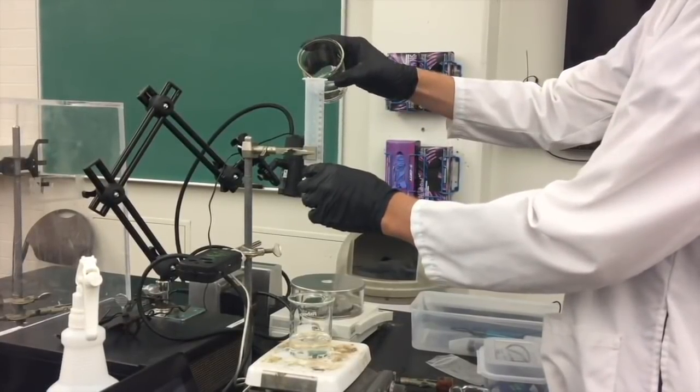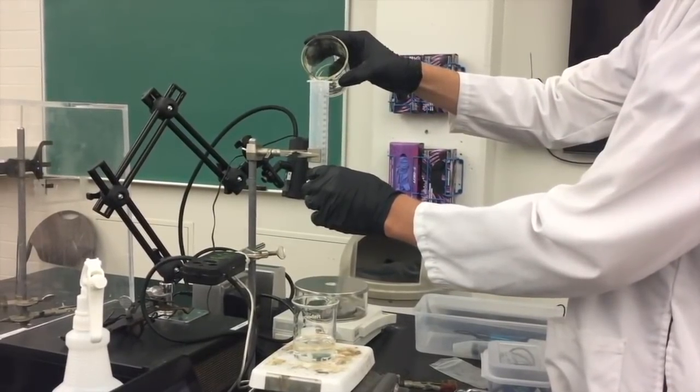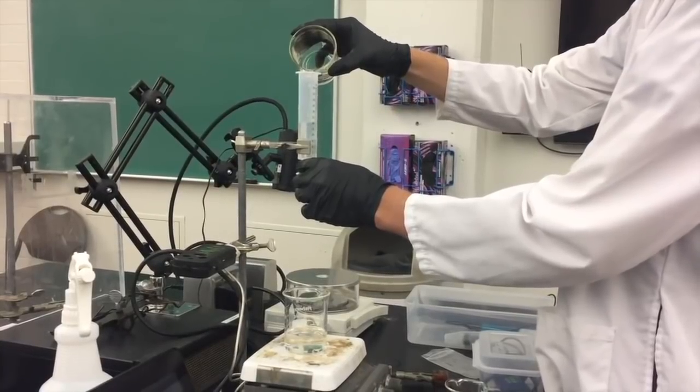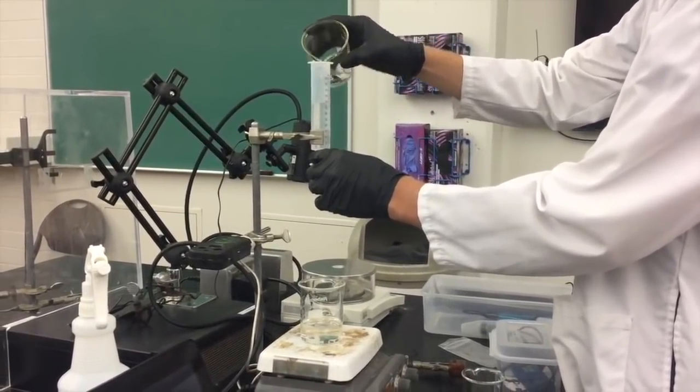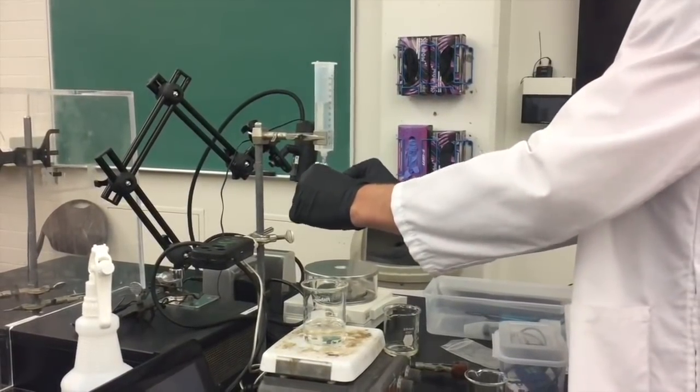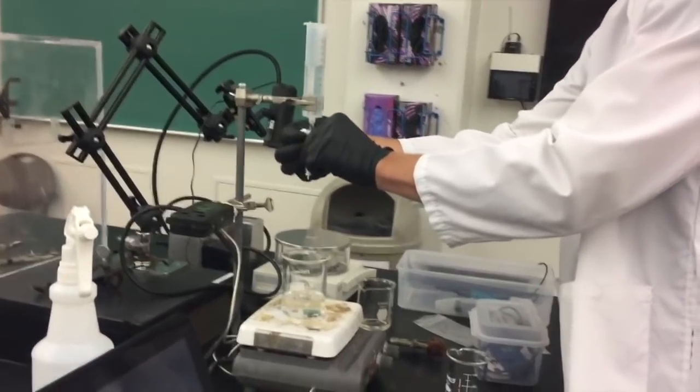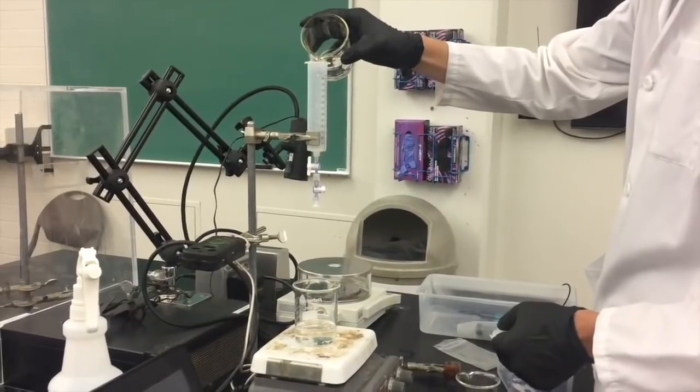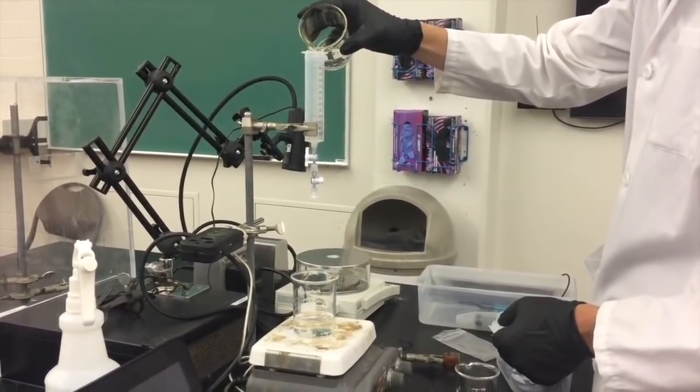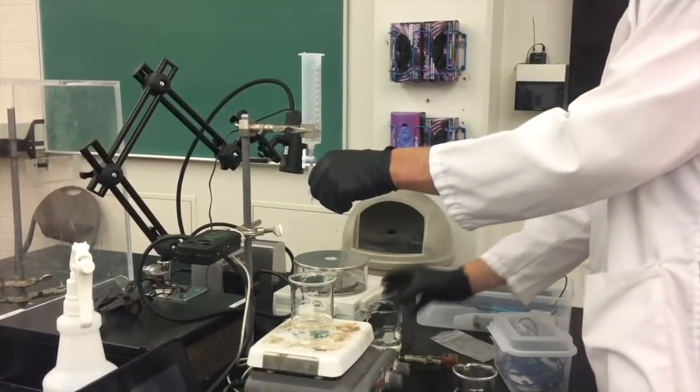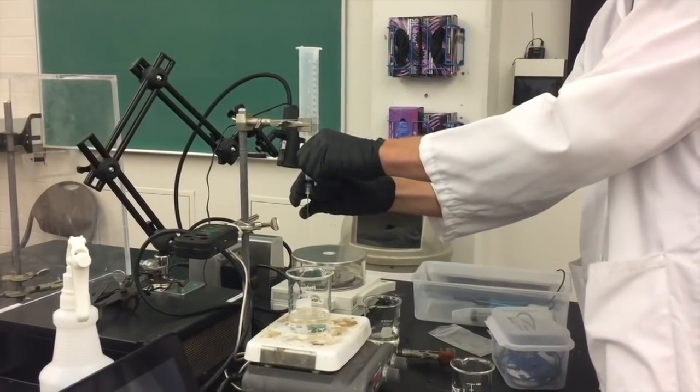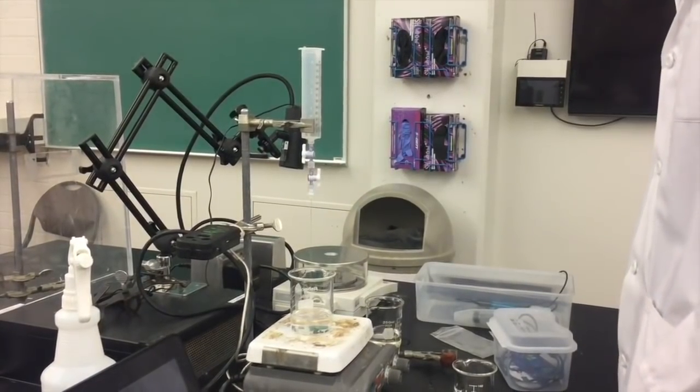We'll then place a beaker underneath the dispenser and open both stop cocks allowing the water that you added in to drain out. Once the water is drained you'll need to add about 10 milliliters of NaOH three separate times making sure that you coat the walls of the syringe as it's dripping out. This will push any remaining water out that would dilute your NaOH once you're ready to start your titration.